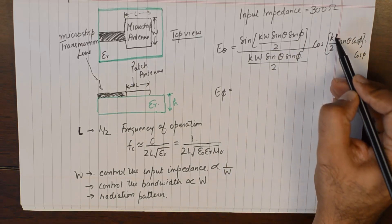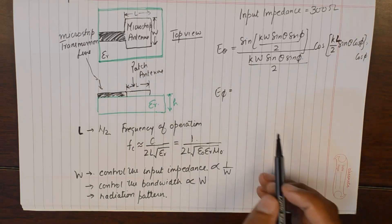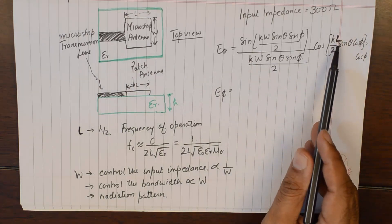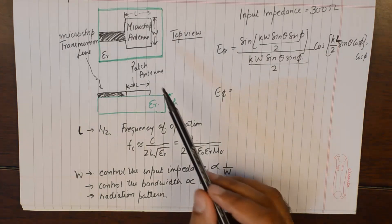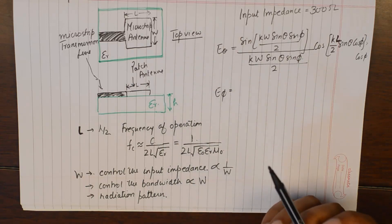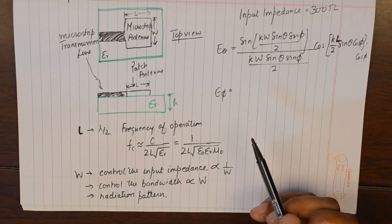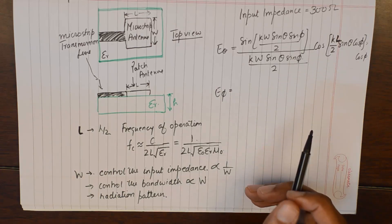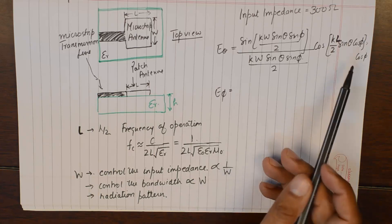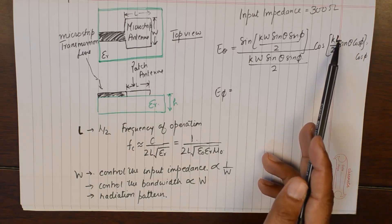Although you will find L still being featured in the formula, this will not change because whenever you make a microstrip patch antenna, you would want that antenna to radiate a specific frequency or a very narrow band of frequency, so you would not want to change this value drastically.